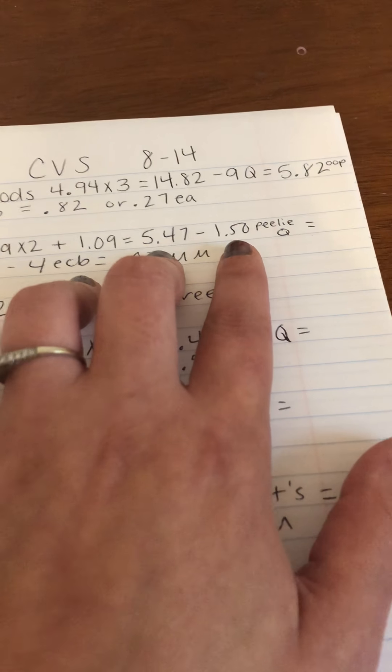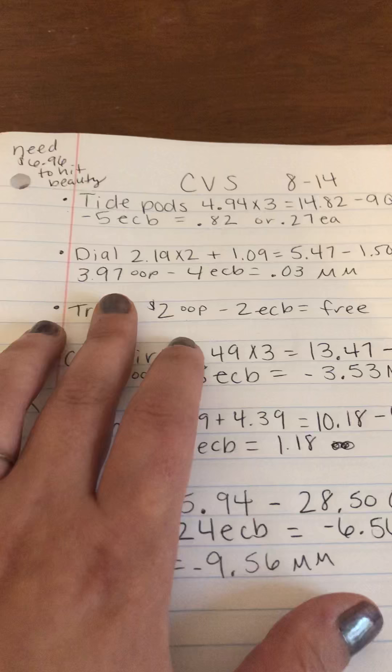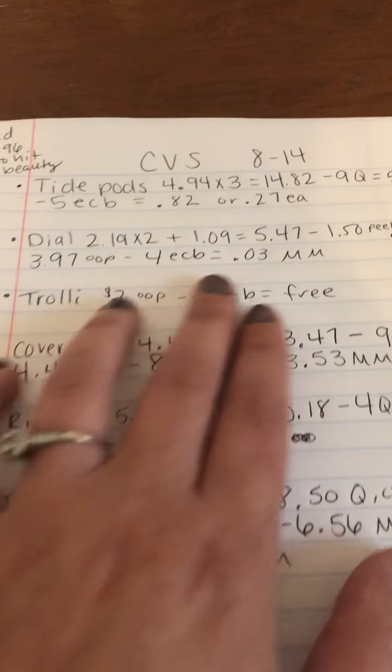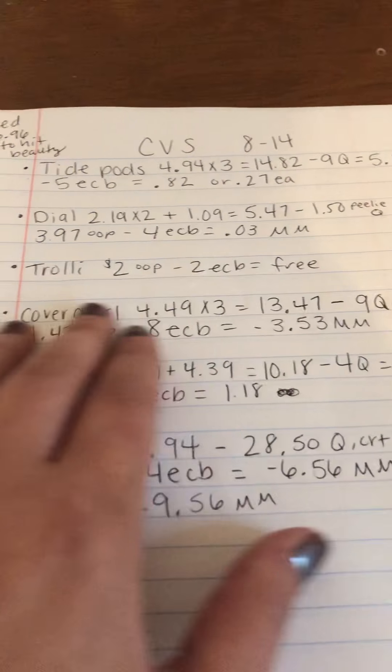I was surprised, a little surprised about that. So that was $1.50 in coupons because they were 50 cents each. So I paid $3.97 out of pocket, got back a $4 extra buck, making those a three cent money maker.